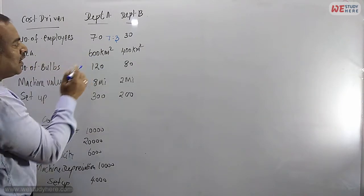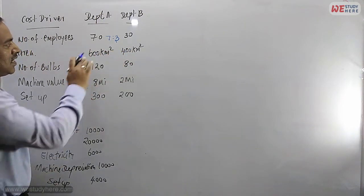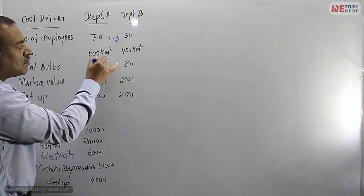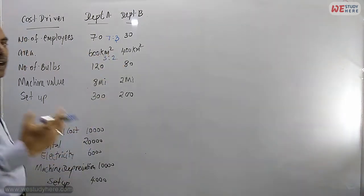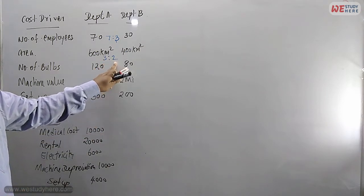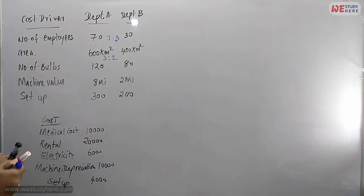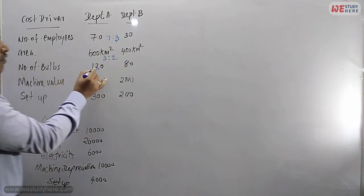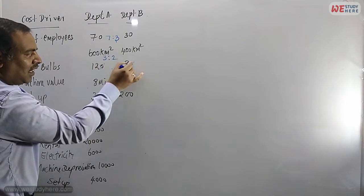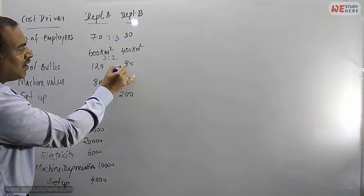For area, we can also make the ratio. Divide by 100: 600 to 400. Then divide by 2, that gives 3 is to 2. If you don't know how to simplify, just keep it as 600 to 400. For number of bulbs, 120 to 80 — cut the zero, divide by 10 to get 12 and 8.